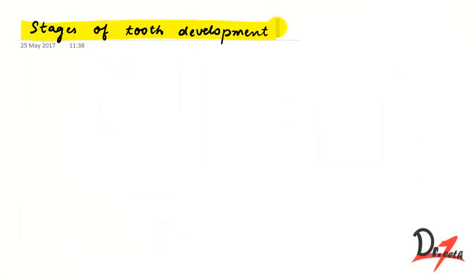How the development actually started. So in this video we are going to study about the bud stage, the cap stage, and the bell stage. Development of tooth is a continuous process. For example, if the tooth is developing and it eventually develops into a tooth like this, the process from here to here is a continuous process.